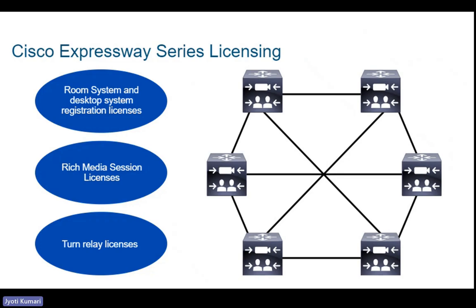Endpoints can register to any of the peers in the cluster. If they lose the connection to their initial peer, they can then re-register to another peer in the cluster. Like in the case of CUCM, we also have an option to configure primary, secondary, and tertiary servers. Those can be either all subscribers, or maybe two subscribers and one publisher. As a best practice, we keep the publisher always as the last preferred node and not the primary. The primary or even secondary should be the subscriber. Same is the case here.